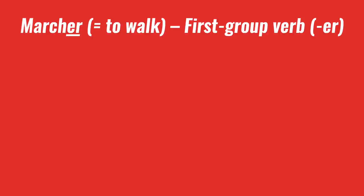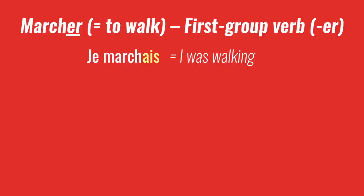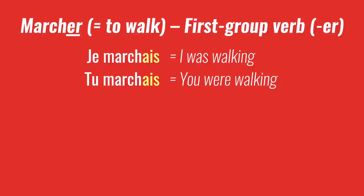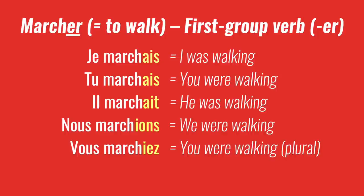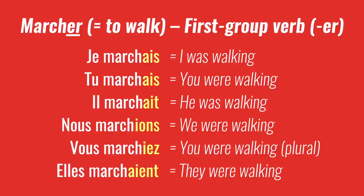So for example, a regular first-group verb ending in -ER like 'marcher,' to walk. It goes like that: Je marchais, tu marchais — same pronunciation, you don't say the S at the end. Il marchait — same here, you don't say the T at the end. Nous marchions. Vous marchiez. Et elles marchaient — as you can see, we don't say the E-N-T at the end. It is 'elles marchaient' in plural as well.